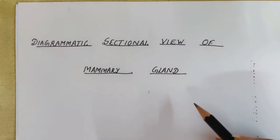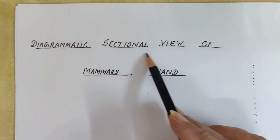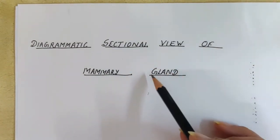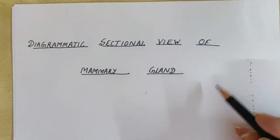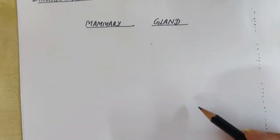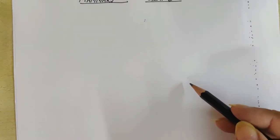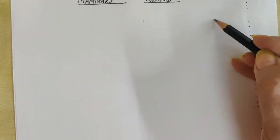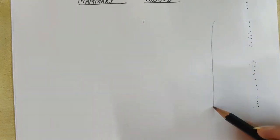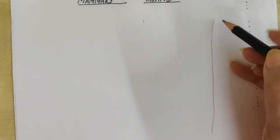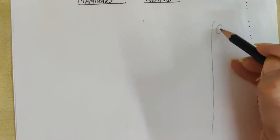Today we are going to learn how to make a diagrammatic sectional view of the mammary gland in human beings. First of all, we need to show the location on the chest where we have ribs present with